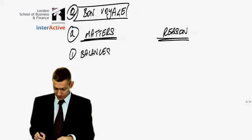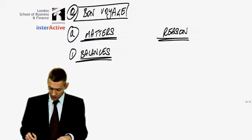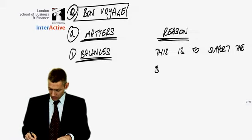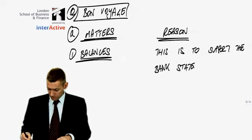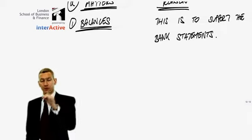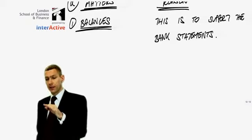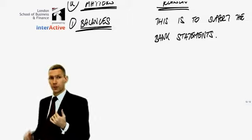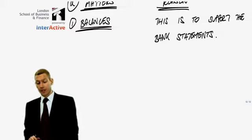So that's the number one question. Number one is balances. This is to support the bank statements. So, you ask them to confirm what balances are in the bank, and then you agree those balances that come from the bank directly to the bank statements that are in the file in the accountant's office.